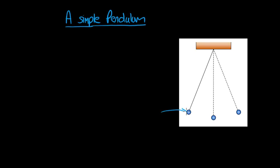We call the mass the bob and the center point. The place where the pendulum will come to rest eventually is called the equilibrium position.